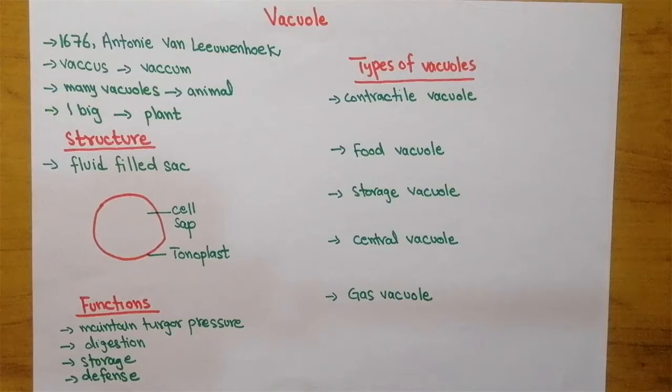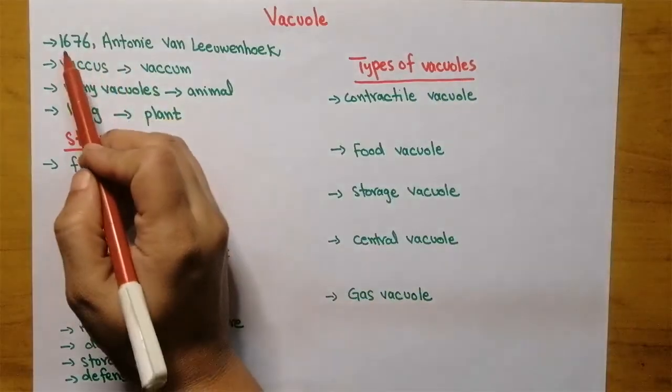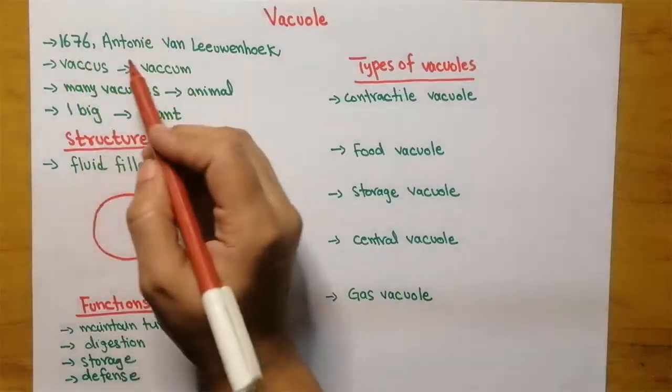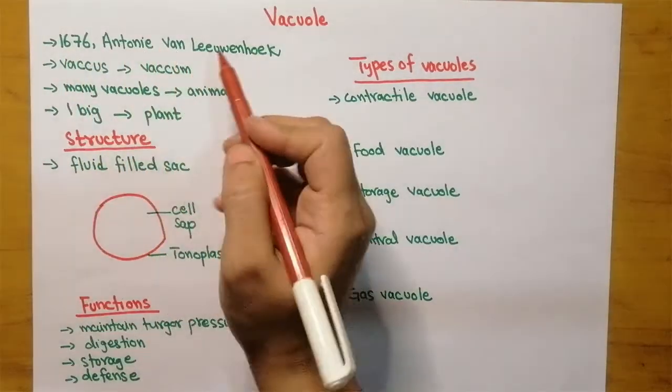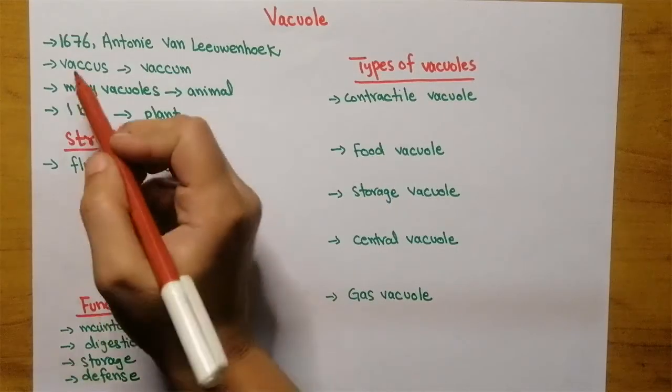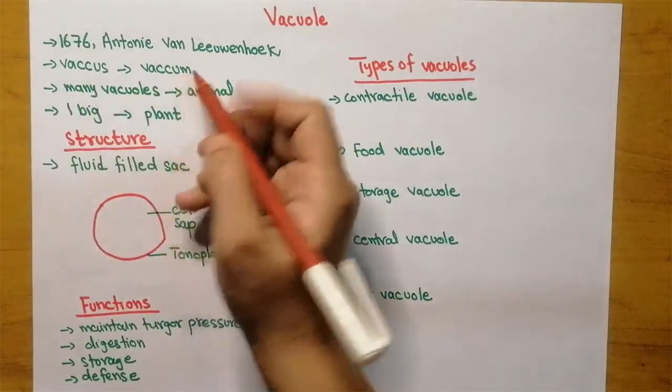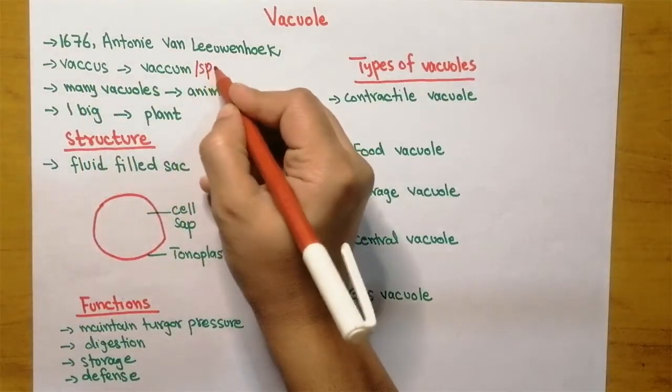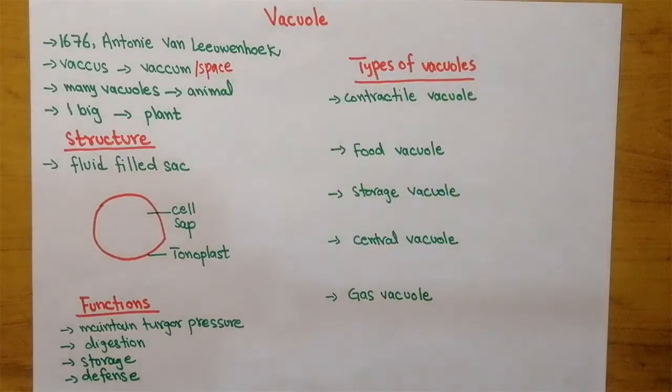The vacuole was first discovered in 1676 by Antonio van Leeuwenhoek. The word vacuole comes from the Latin word vacus, which means vacuum or space. It was actually taken from the French word which means little vacuum, and this word is used to represent the empty space in the cytoplasm.